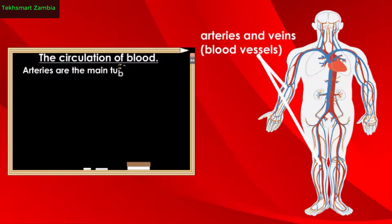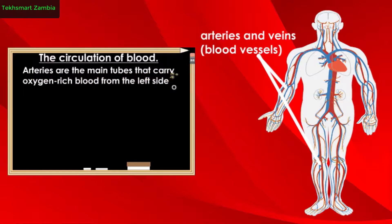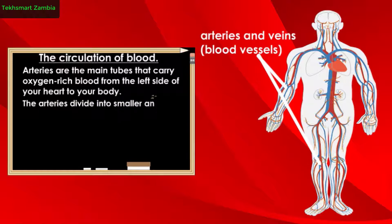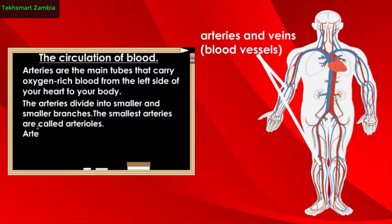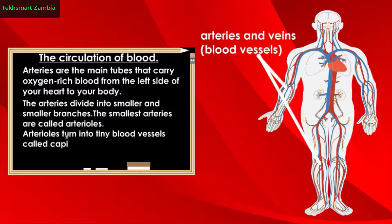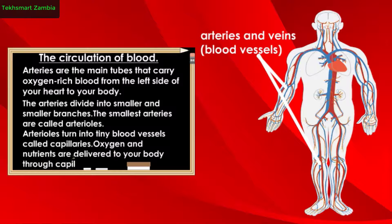Arteries are the main tubes that carry oxygen-rich blood from the left side of your heart to your body. The arteries divide into smaller and smaller branches; the smallest arteries are called arterioles. Arterioles then turn into tiny blood vessels called capillaries, through which oxygen and nutrients are delivered to your body.